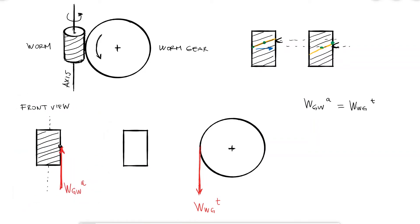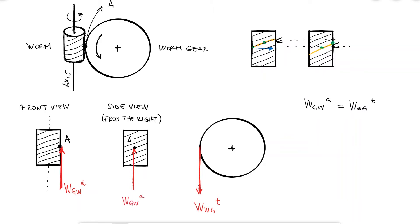If I look at the worm from the side where it makes contact with the worm gear, I would see the axial component of the force right on the middle of the worm. The contact forces are normal to the surface of the teeth at the point of contact, so the total force W_GW will be perpendicular to the teeth, and the angle between the projection vector and the actual force will be the pressure angle.